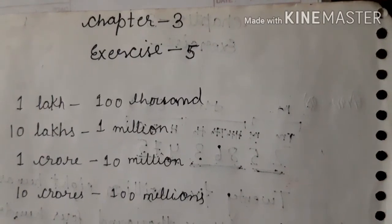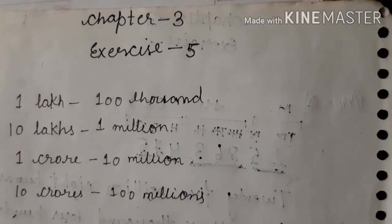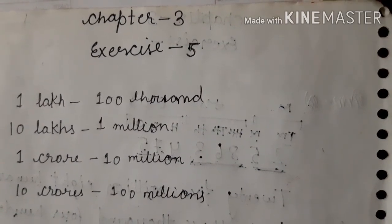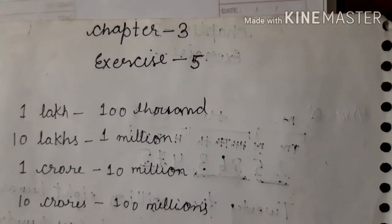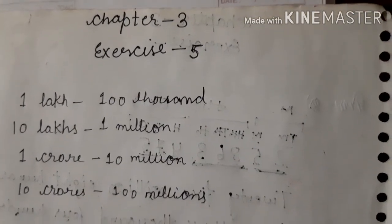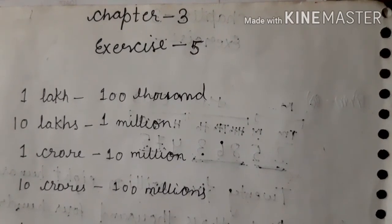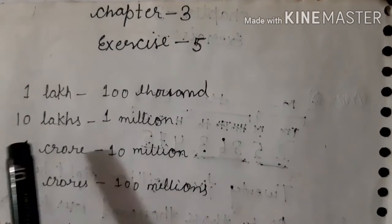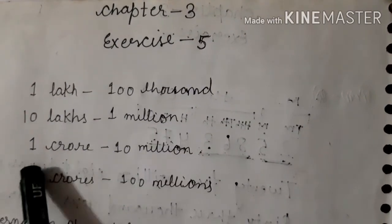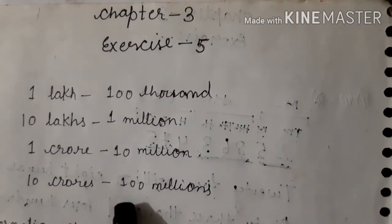Hello children, how are you? In this video I'll explain Exercise 5 of Chapter 3rd — this is your last exercise of this chapter. The topic is the International Face Value System, which is followed by a large number of countries in the world. In this system: 1 lakh equals 1,00,000; 10 lakhs equals 1 million; 1 crore equals 10 million; and 10 crores equals 100 million.